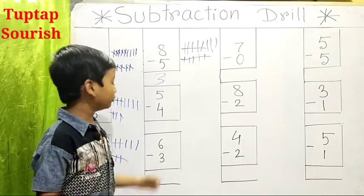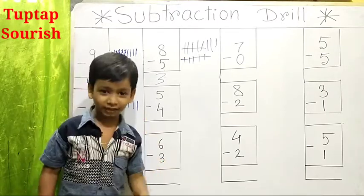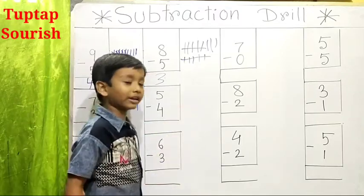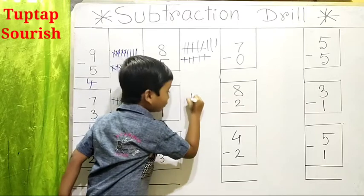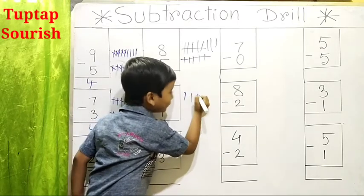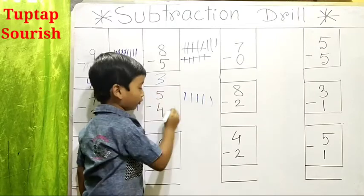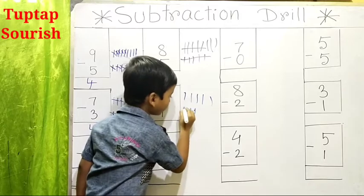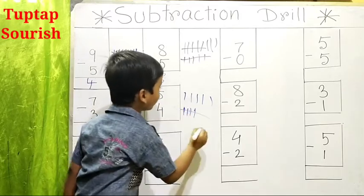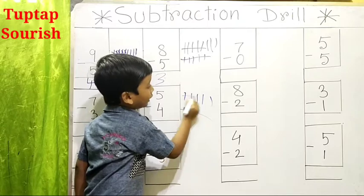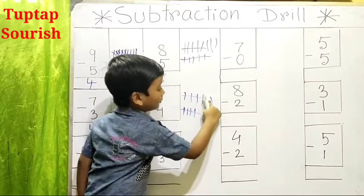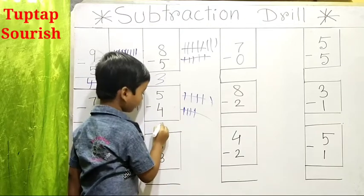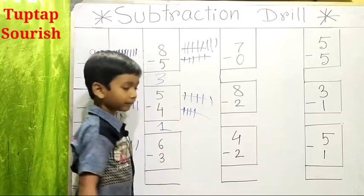So you have eaten 4 jellies of them. Let's draw here 5 lines: 1, 2, 3, 4, 5. Here 4: 1, 2, 3, 4. We have to cut here 4, and here also 4. So how many left? 1. So the answer is 1.